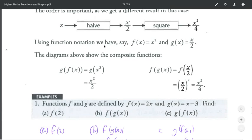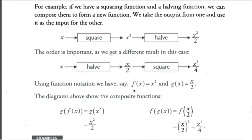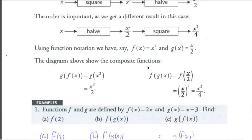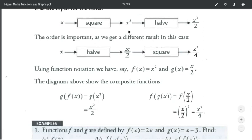Using function notation, we have F of X equals X squared. So that's us squaring something. So if I was doing F of 3, that would be 3 squared. And G of X equals X over 2. So if I was doing G of 9, that would be 9 over 2. The diagrams above show the composite functions.